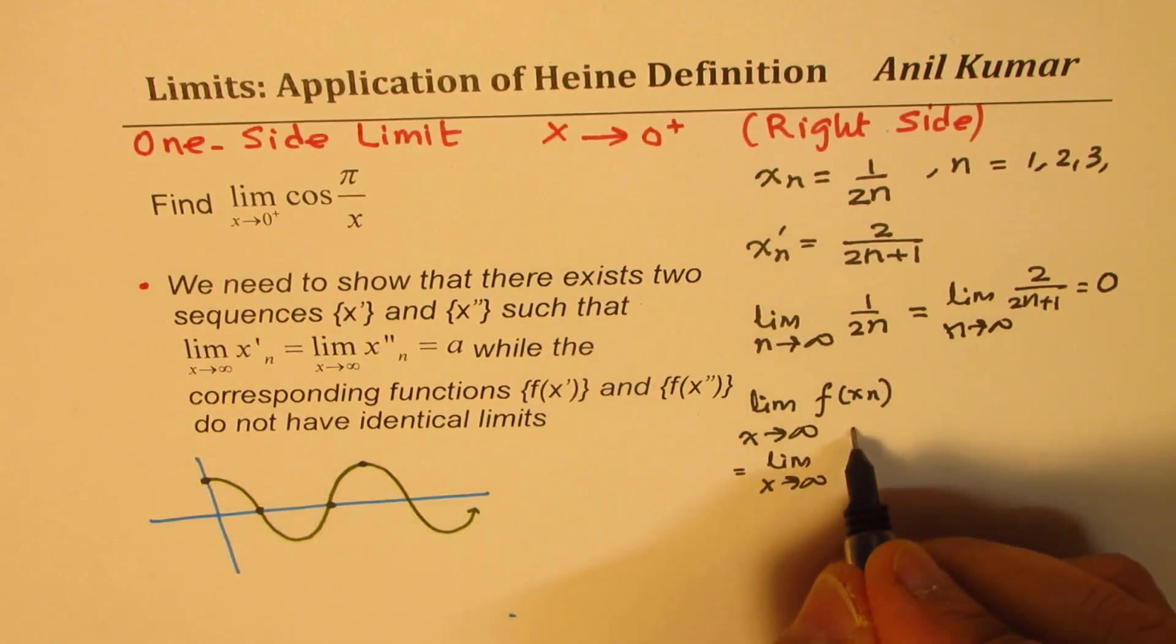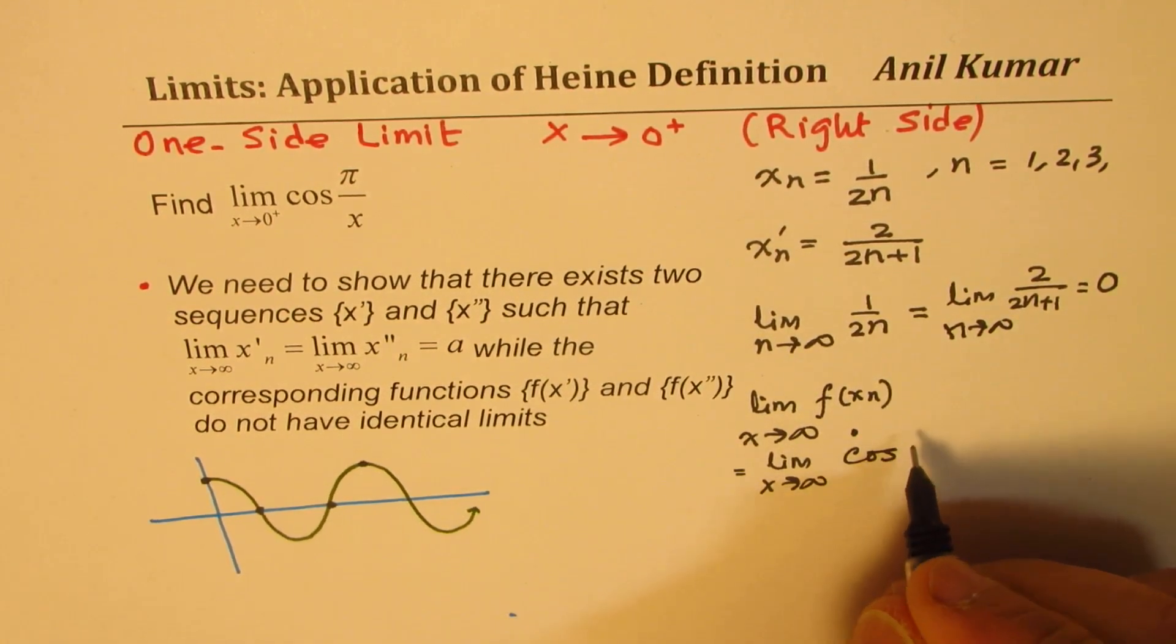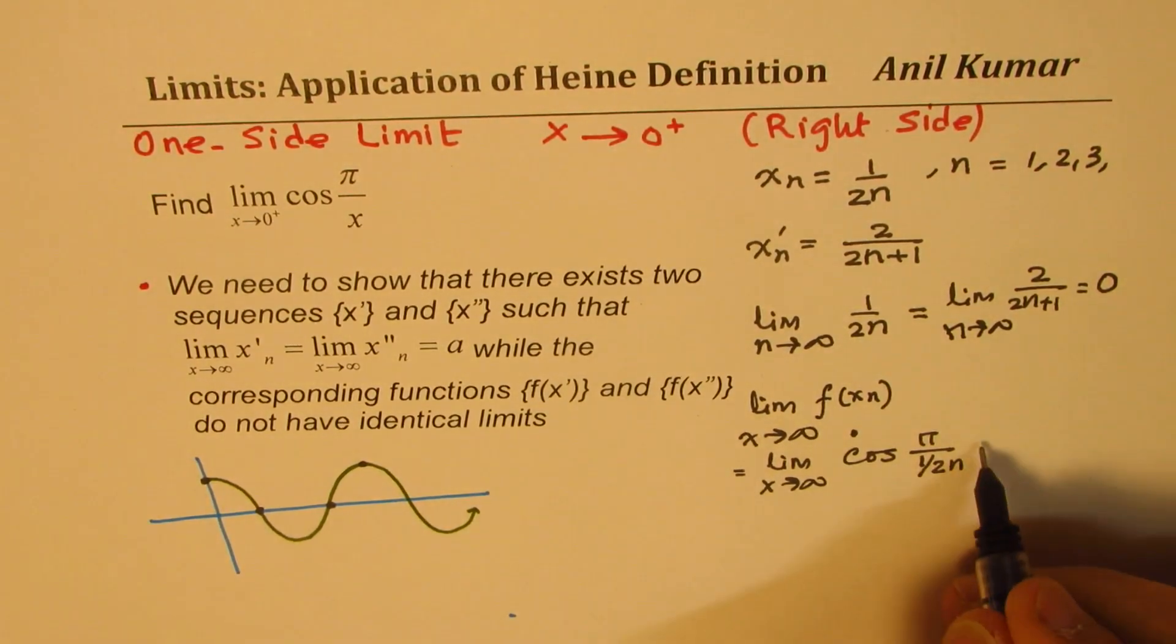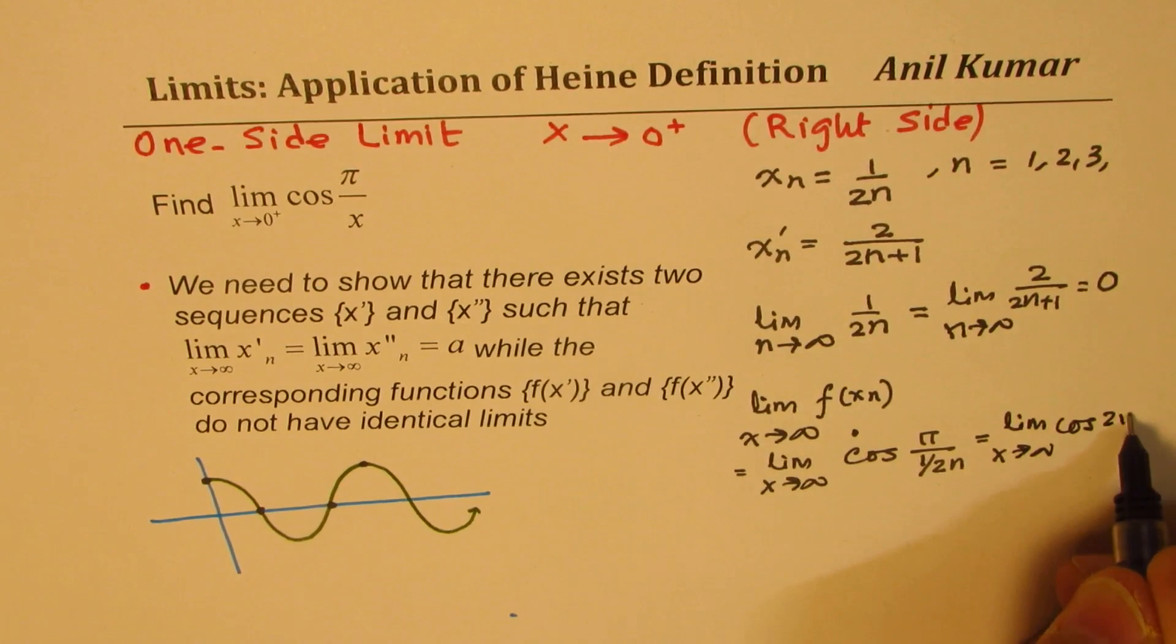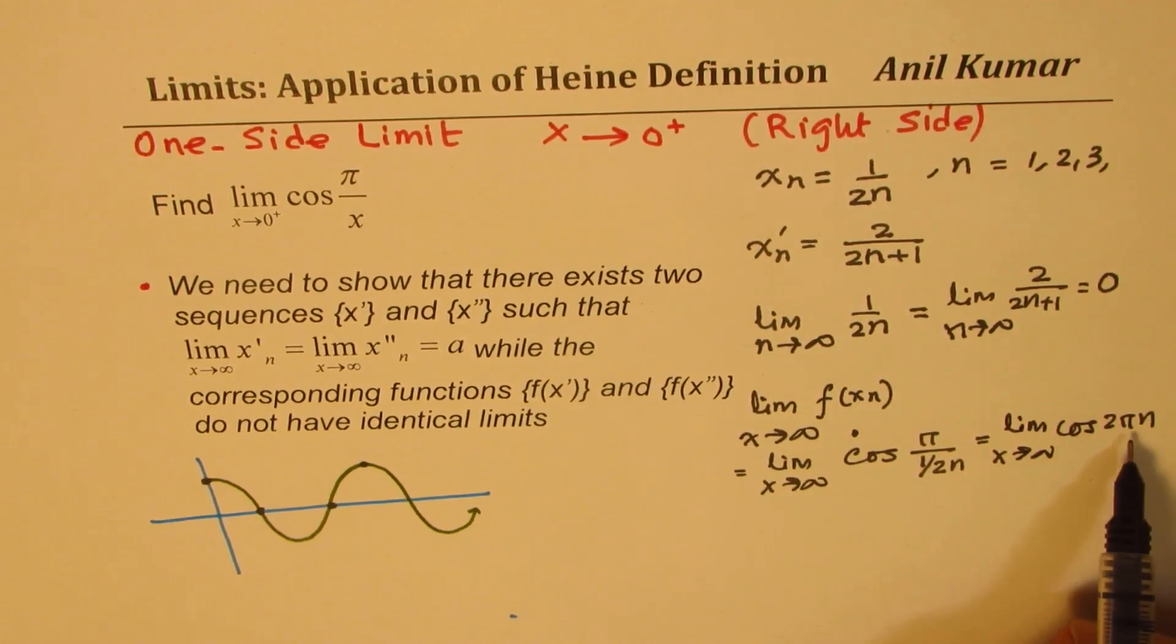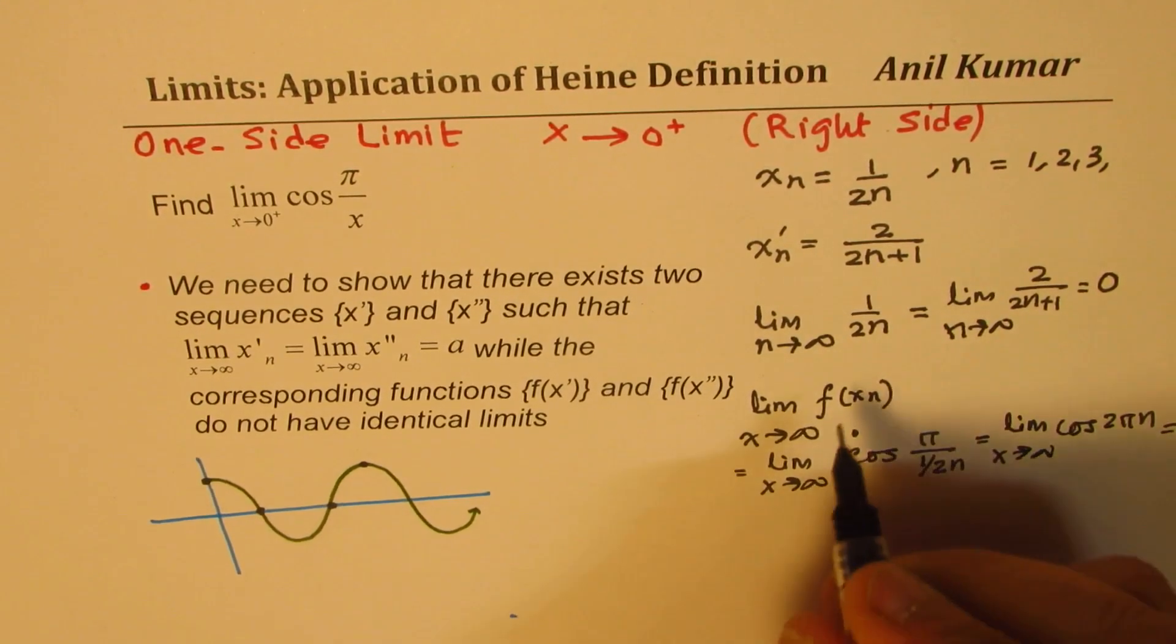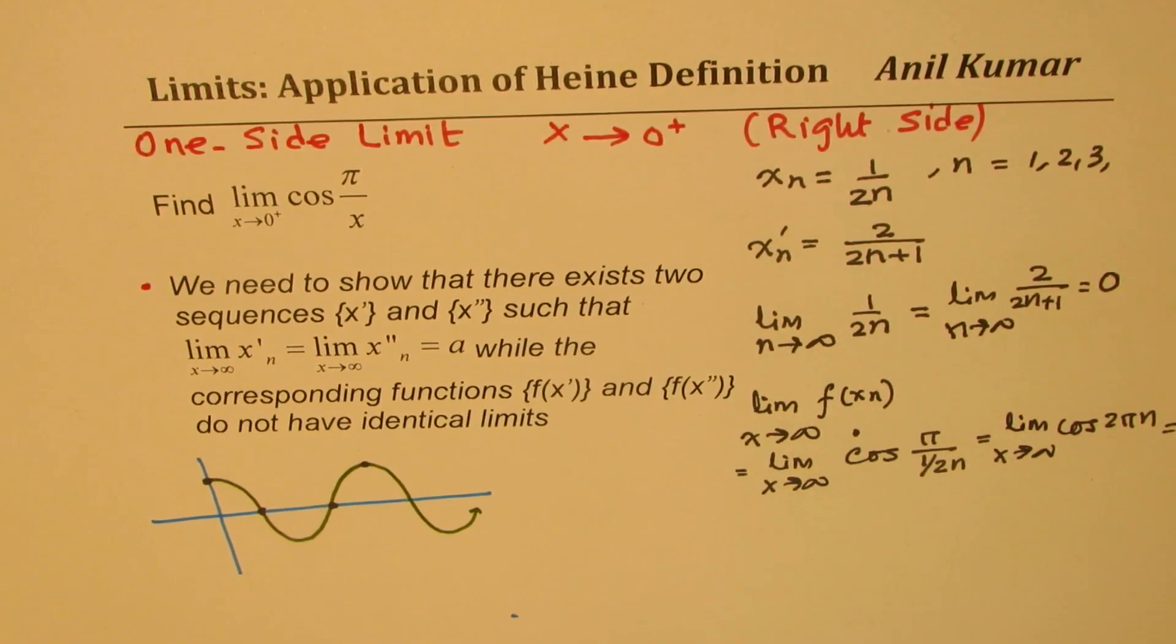We could write this as cos of 2 π n. x we could write as π over, replacing x with 1 over 2n, will give us limit x approaches infinity for cos of 2 π n. Now for 2 π n, we know the value for cos is always 1. So this limit is equal to 1. So for us the limit for the first function is 1.